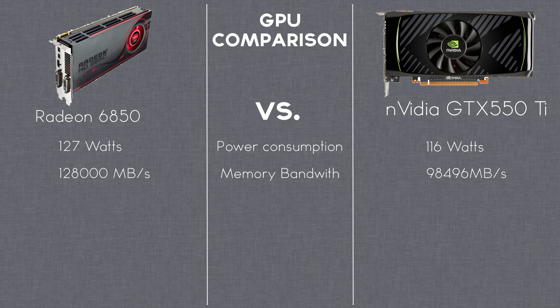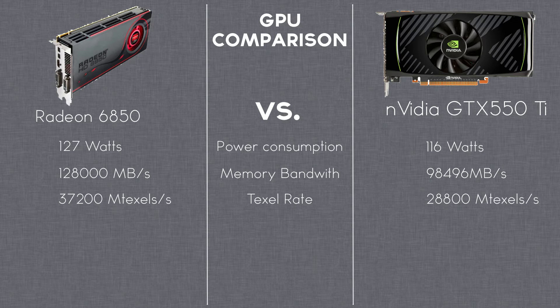So the 6850 wins memory bandwidth. Also in texel rate the 6850 is faster by 29%, and in pixel rate it is 15% faster.